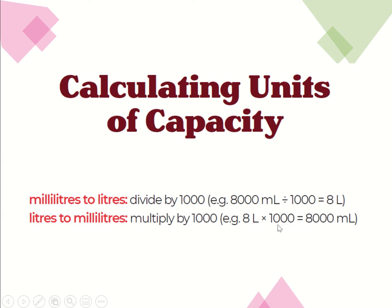If you're multiplying by 10, then 8 times 10 is 80 — you add one zero. If you do 8 times 100, that's 800 — you add two zeros. And here, if you do 8 times 1,000, you add three zeros to the end, and that becomes 8,000 milliliters.